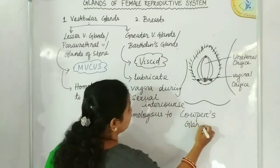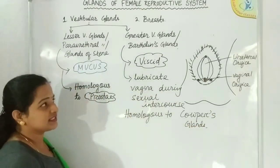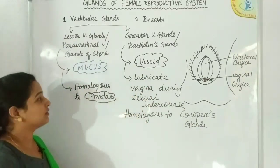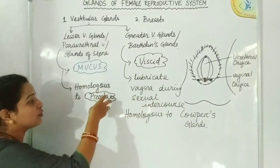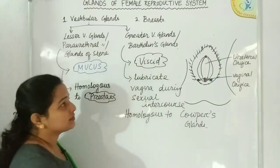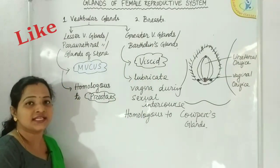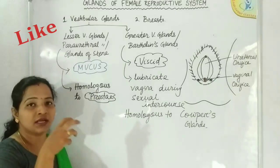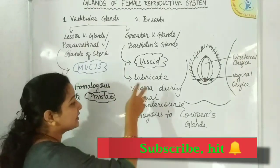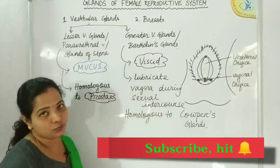To summarize: the lesser vestibular glands, present on either side of the urethral orifice, are homologous to the prostate in males. The greater vestibular glands, also known as Bartholin's glands, are considered the most important glands of the female reproductive system and are homologous to the Cowper's glands in males.